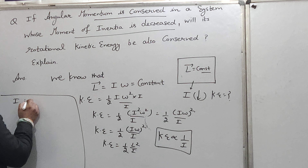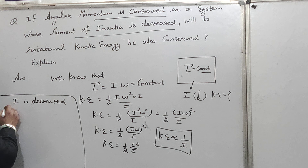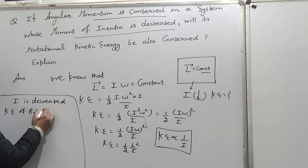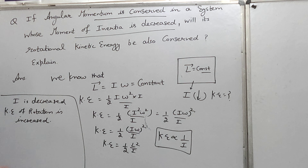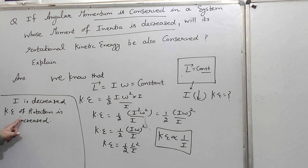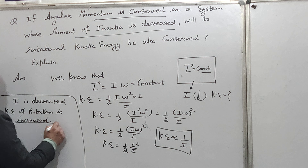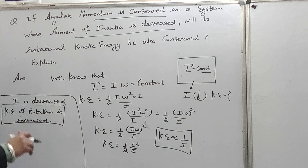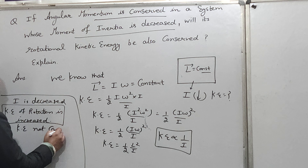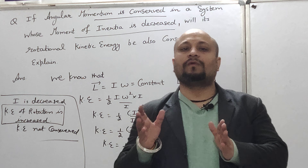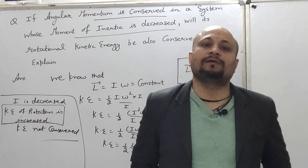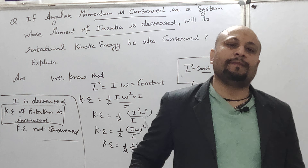Now, as stated in the question, if the moment of inertia I is decreased, then since kinetic energy is inversely proportional to I, the kinetic energy of rotation will increase. If I is decreased, kinetic energy of rotation is increased. Since kinetic energy increased, it means it will not be conserved. So the answer is: when moment of inertia decreases, rotational kinetic energy increases and will not be conserved.